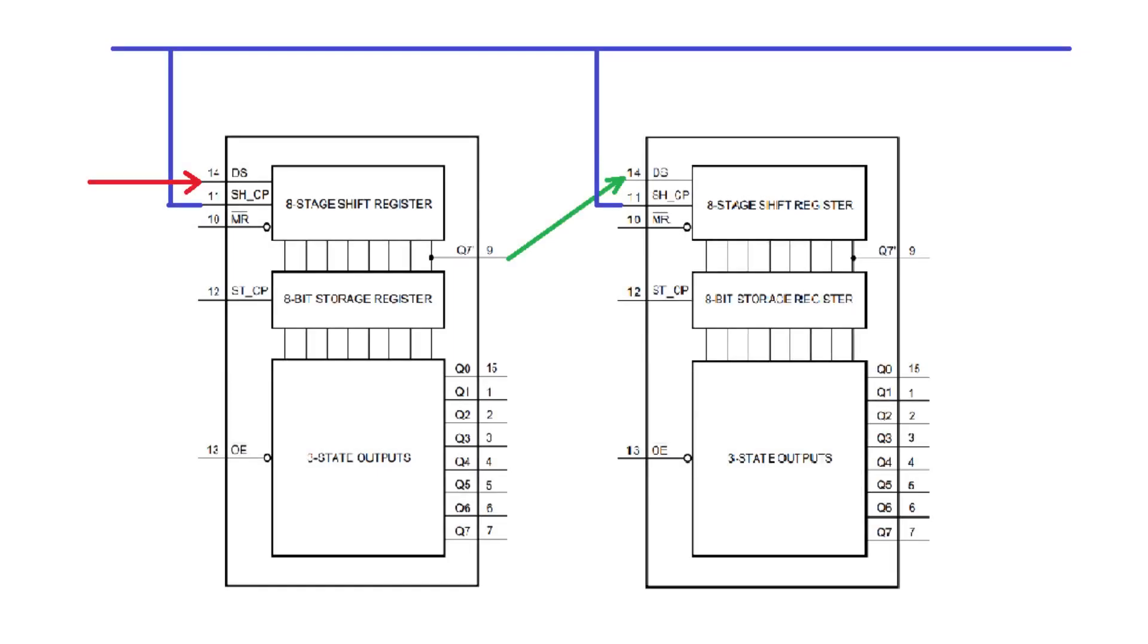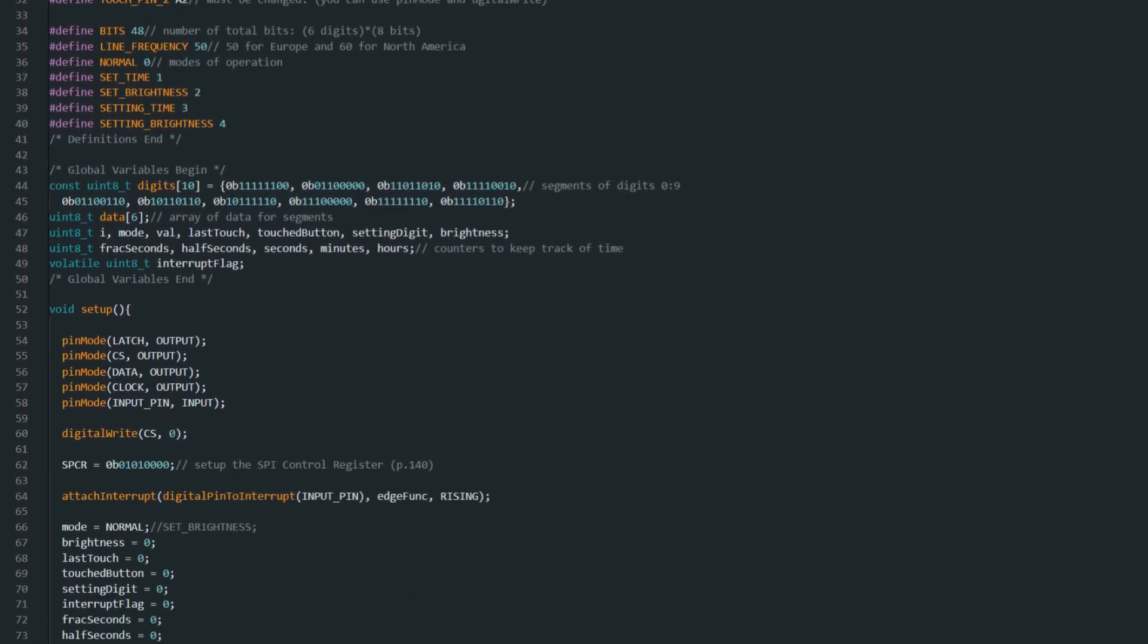The last functionality that I want to add to this clock is a variable brightness, and this is going to be actually very easy to do because we have control of the output enable of the shift registers that are controlling the LEDs. So if we feed a PWM signal to this we can effectively change the brightness of it.